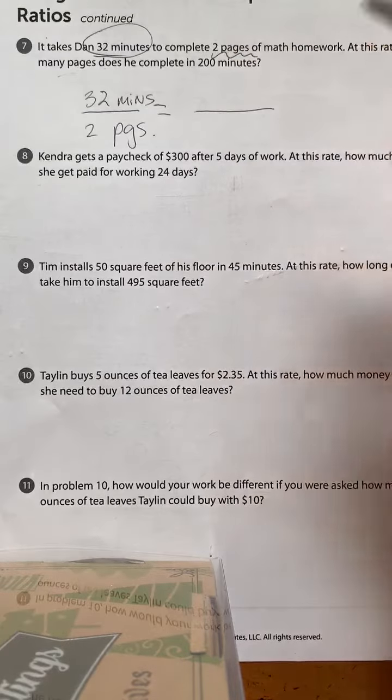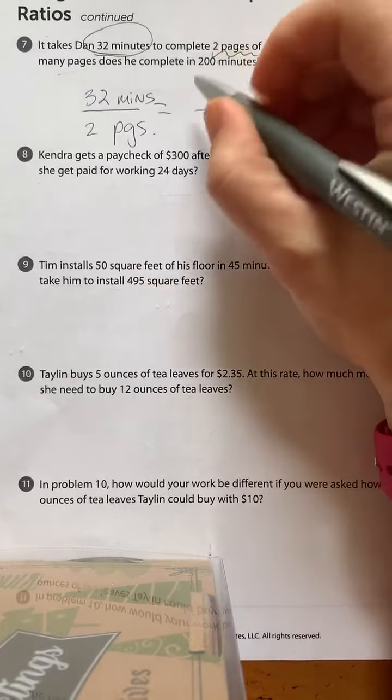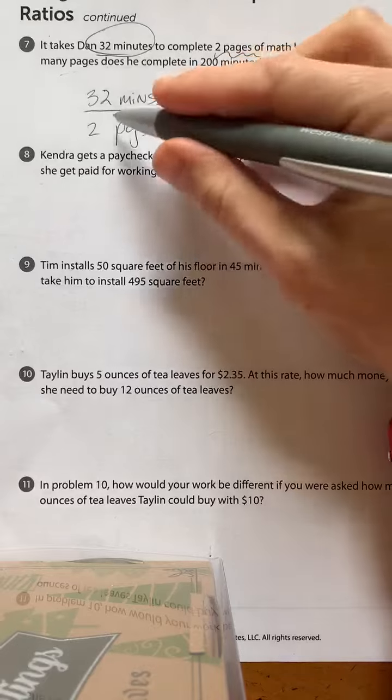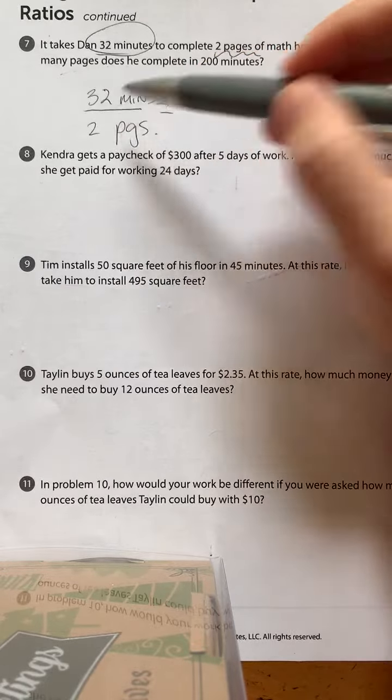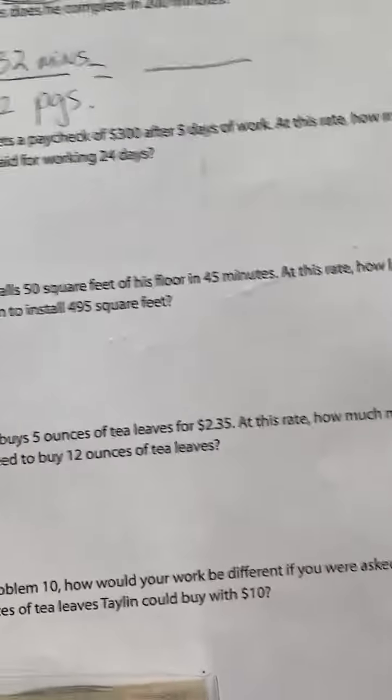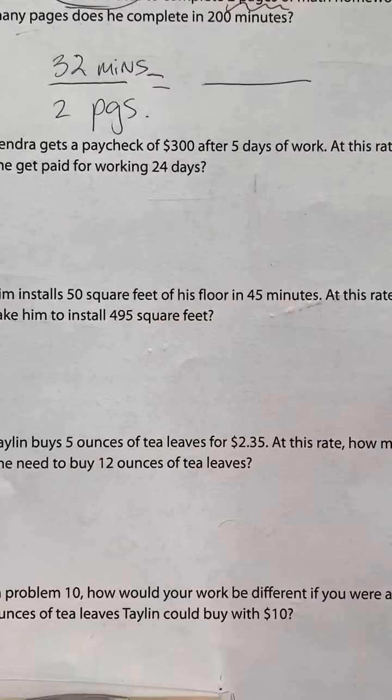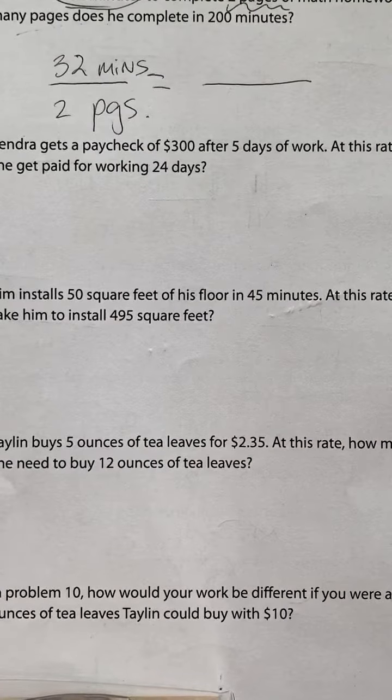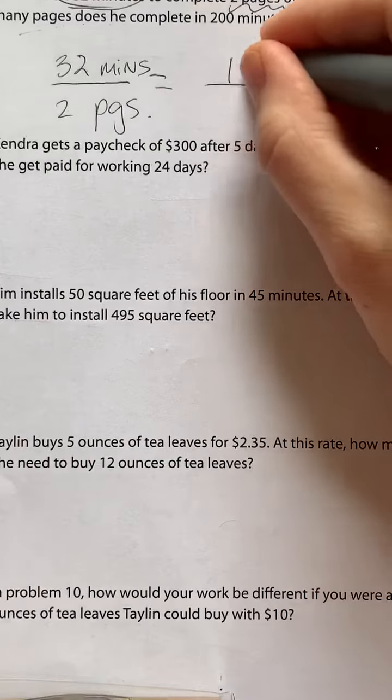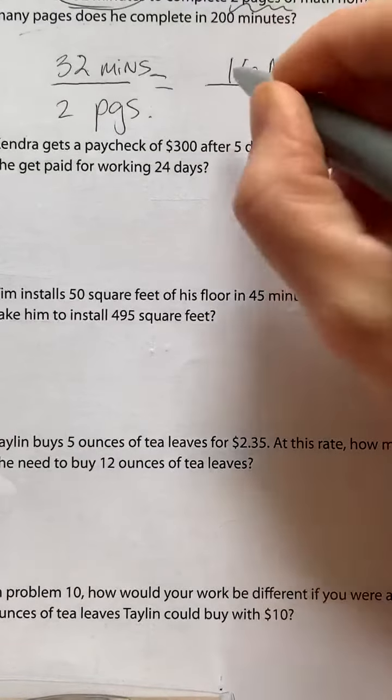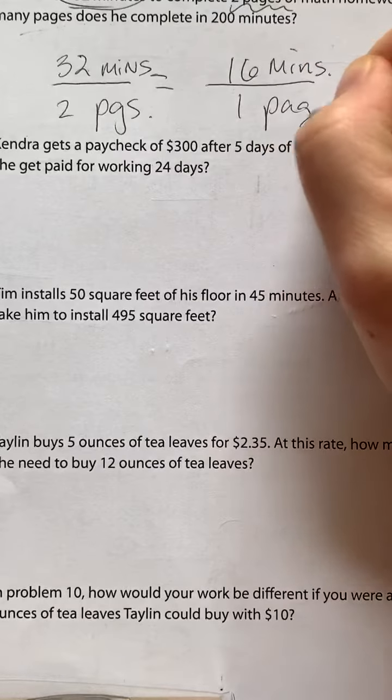Okay, so before we even do this, let's just divide those because it's going to make our life a lot easier. What is 32 divided by 2? 16. So this person can read one page in 16 minutes.